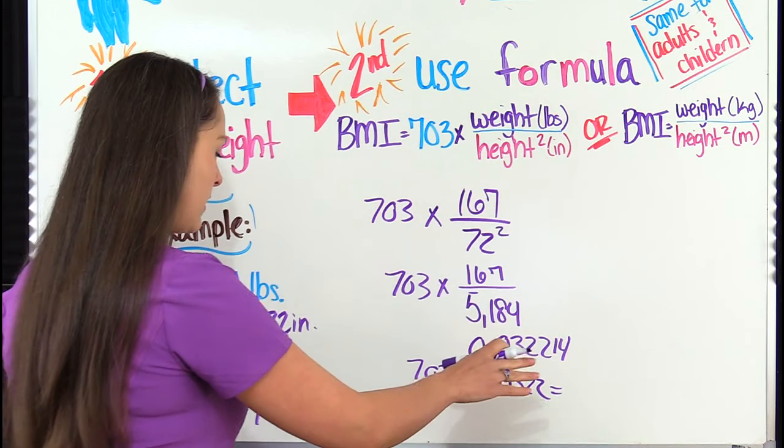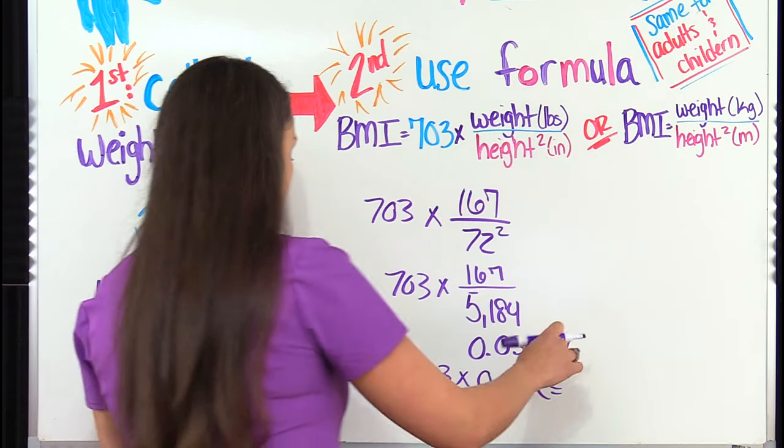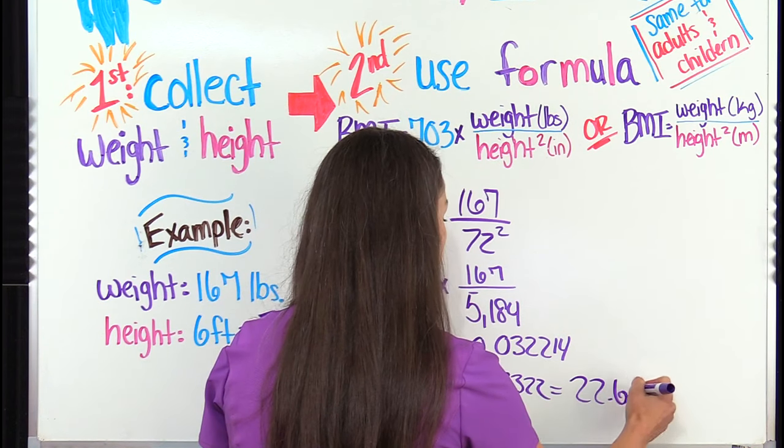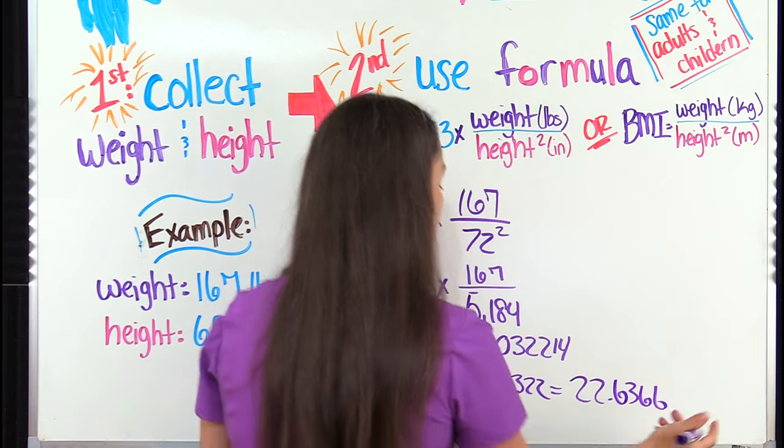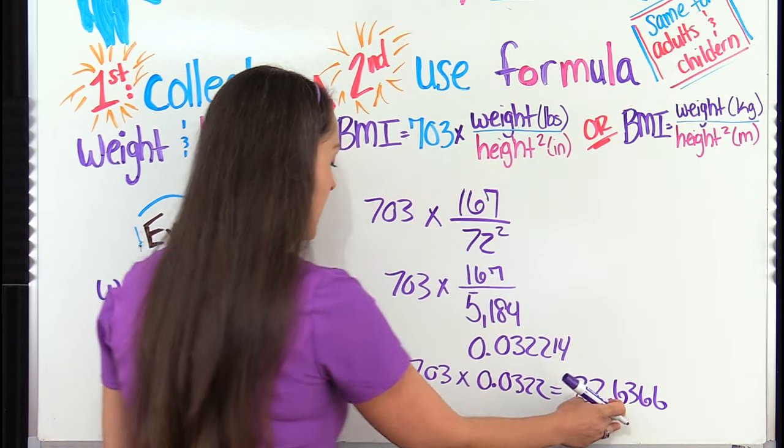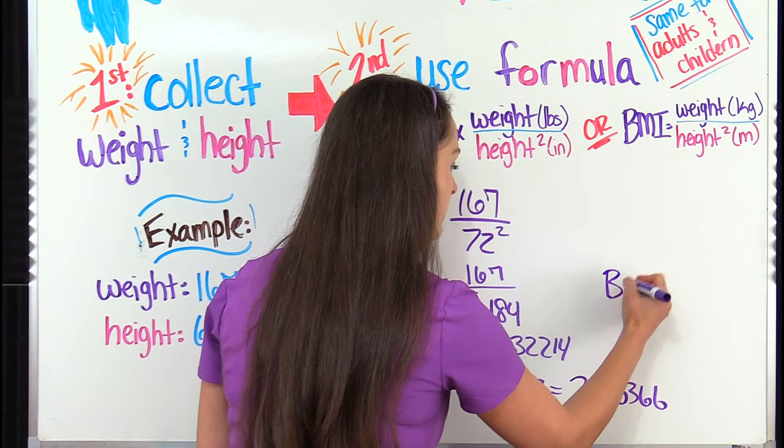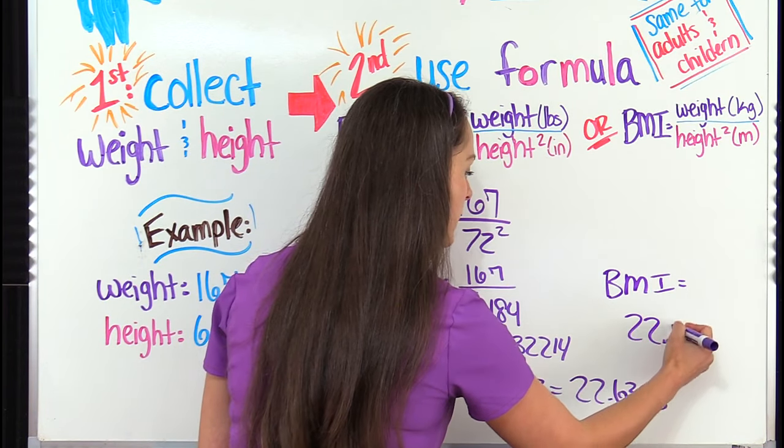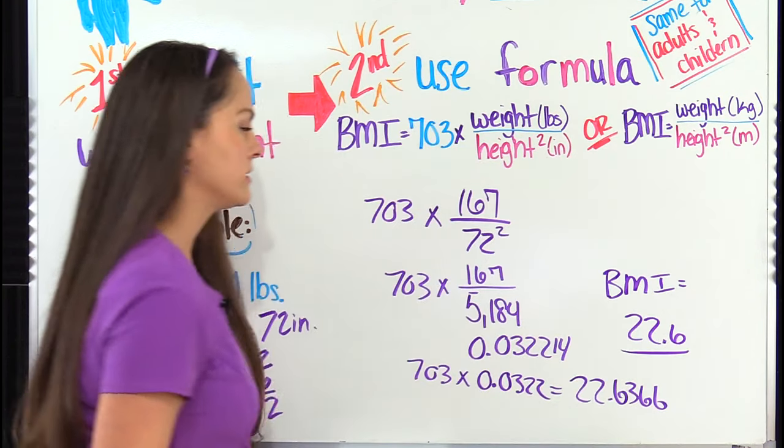And then we're going to multiply that by 703. So when we multiply all that out we get 22.6366 and we're going to round our BMI to that first decimal place which is the tenths place. And whenever we do that we get a BMI of 22.6. And that is our answer.